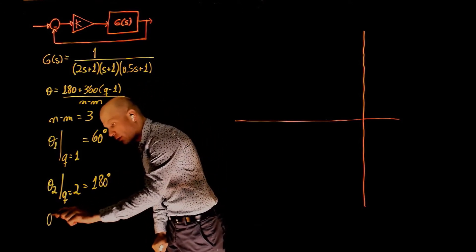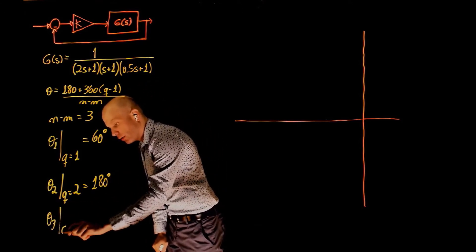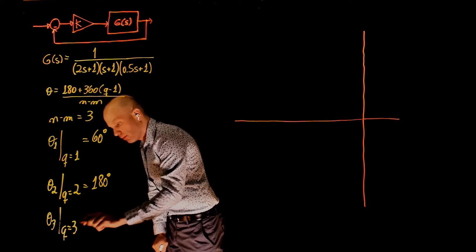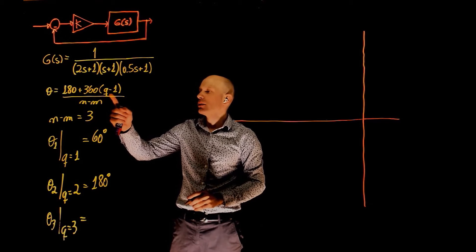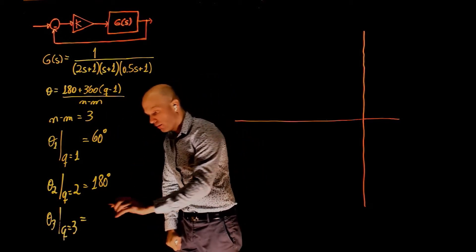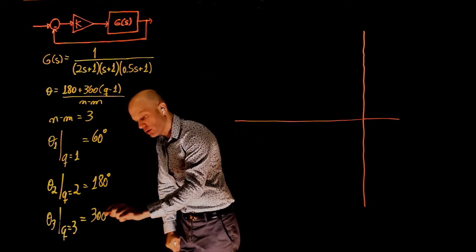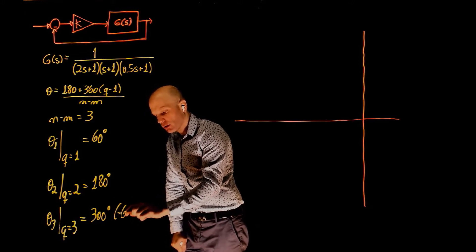And for theta three, set q equals to three, and this will give 180 plus 360 times two divided by three. This is 300 degrees or negative 60 degrees.